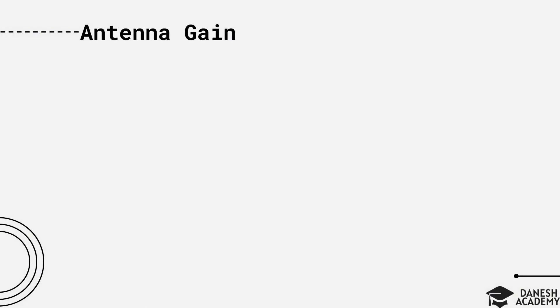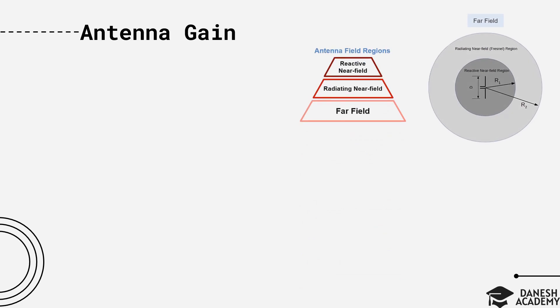Now, before defining the antenna gain, we need to introduce some other key parameters. The first is antenna field regions. The space surrounding an antenna is usually subdivided into three regions: reactive near field, radiating near field, and far field. These regions are so designated to identify the field structure in each of the regions. The boundaries separating these regions are not unique, although various criteria have been established and are commonly used to identify the regions. They are usually defined based on the parameter d, which is the largest dimension of the antenna, and wavelength, which depends on the operating frequency.